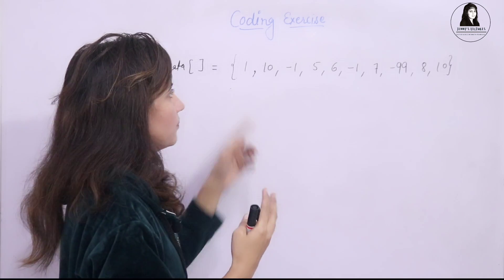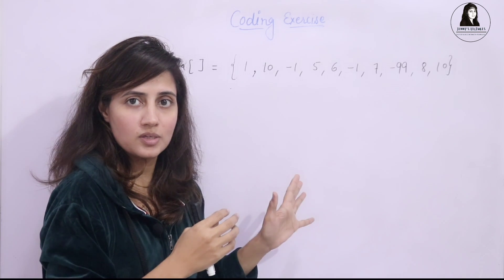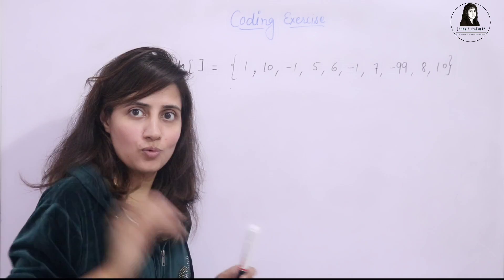So, ultimately the answer would be 1, 10, 5, 6, 7. That's it. You have to print this thing. And one more condition, use range-based for loop.